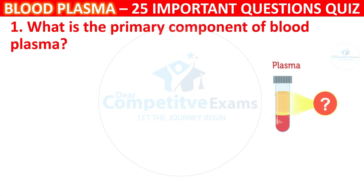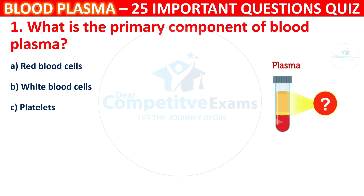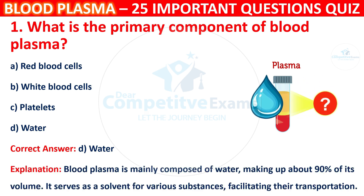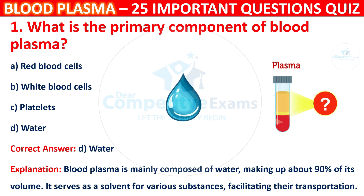Question 1: What is the primary component of Blood Plasma? Your options are: Red Blood Cells, White Blood Cells, Platelets, or Water. The correct answer is D, i.e. Water. Blood Plasma is mainly composed of water, making up about 90% of its volume. It serves as a solvent for various substances, facilitating their transportation.